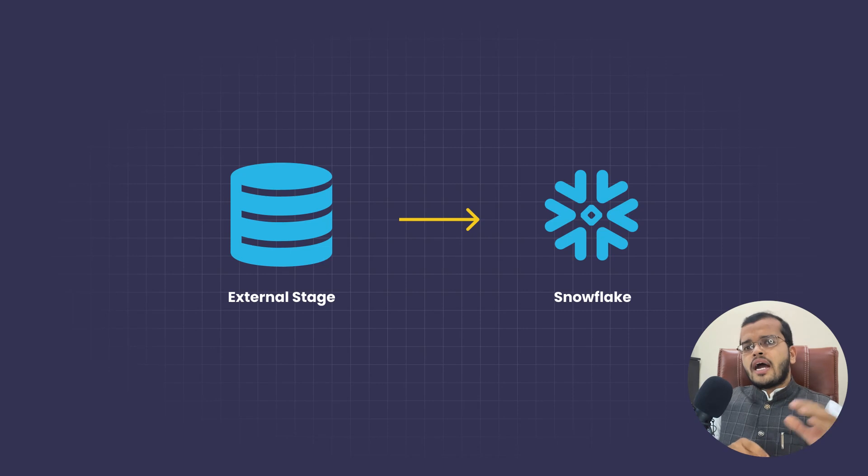In our previous videos, we have seen how to use the COPY command and how to load the data from our external stage into Snowflake. Now the important point is that we have loaded the data from our external stage into Snowflake, but if we want to do some sort of transformations, how should we do that?